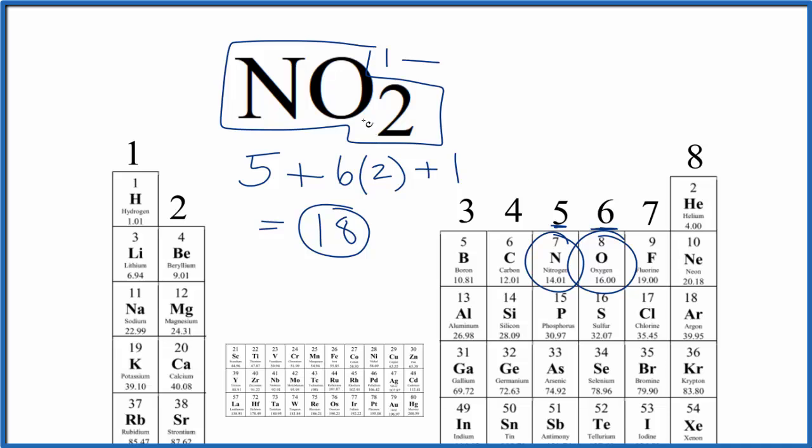If we were drawing the Lewis structure for NO2-, we'd distribute them around the nitrogen and the oxygen atoms. In this case, it would work out a little better since we have an even number.